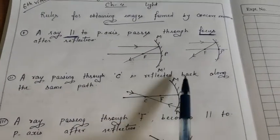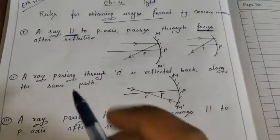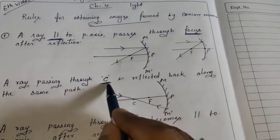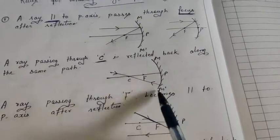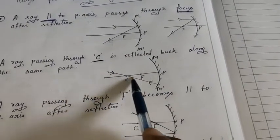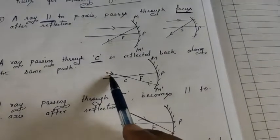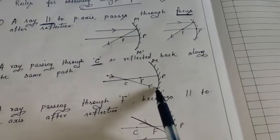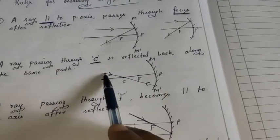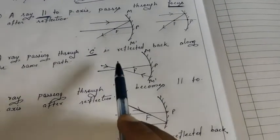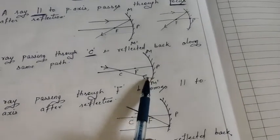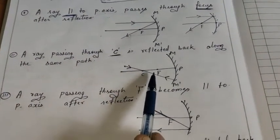Second rule: Ray passing through center of curvature is reflected back along the same path. Agar ek ray center of curvature se pass kar raha hai, toh reflection ke baad usi raaste par wapas aa jaata hai. Incident ray aur reflected ray same path par hoti hain jab ray C se pass ho.